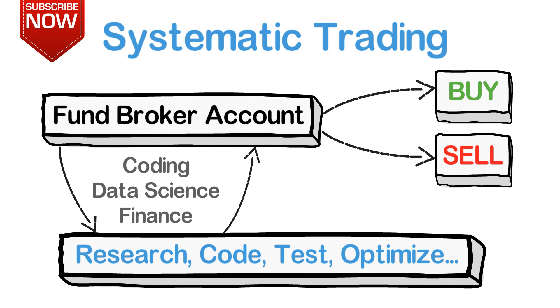Sadly, this usually is not enough to become a consistently profitable trader. So summed up, algorithmic trading has a higher entry barrier which puts a few more hurdles between you and you making stupid trades.